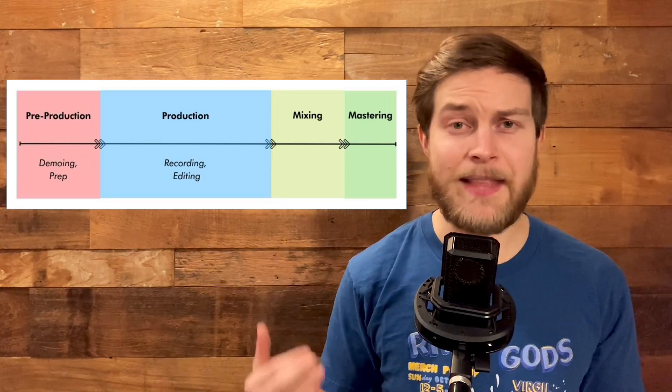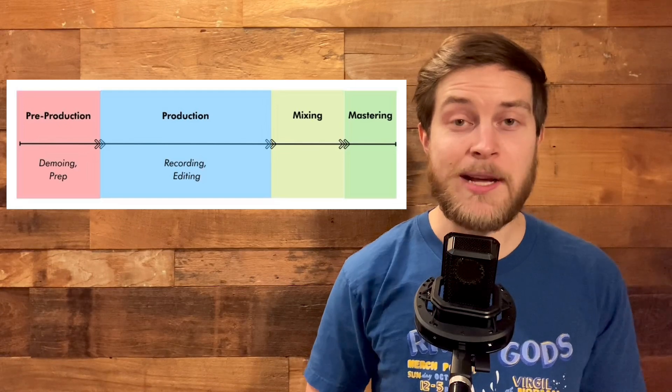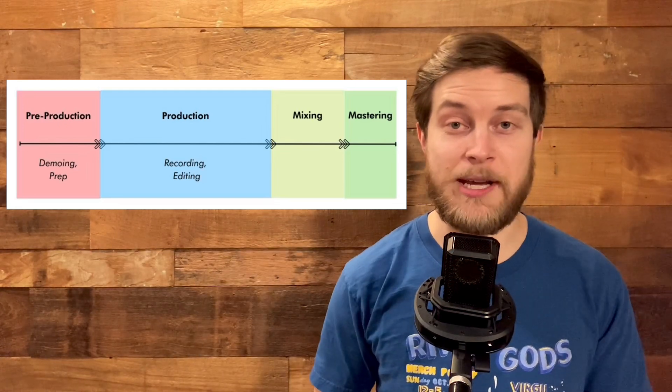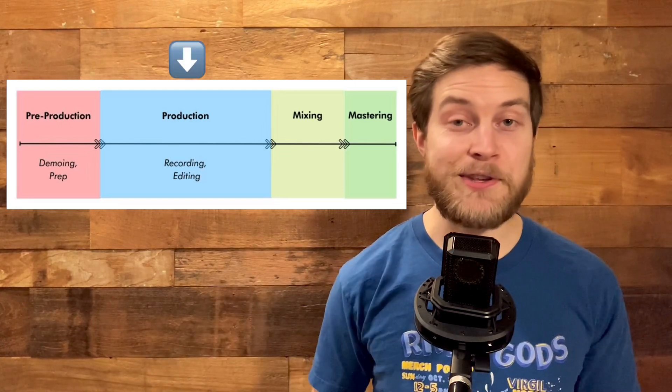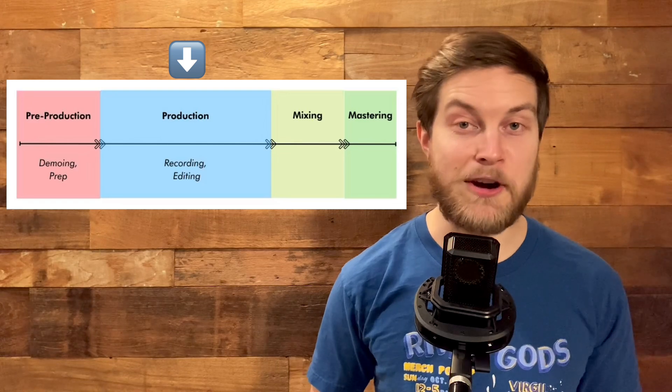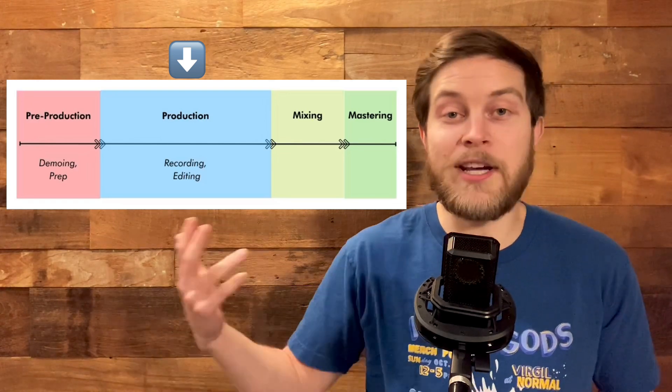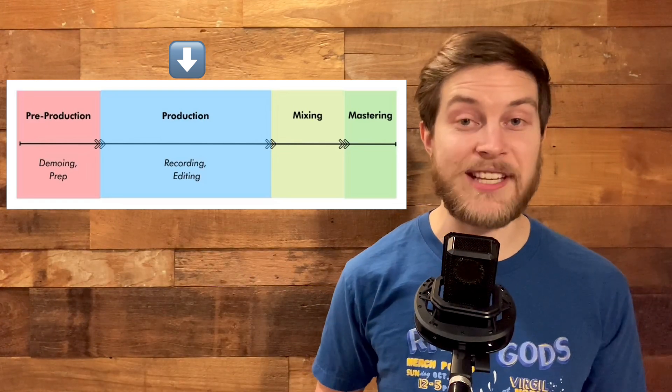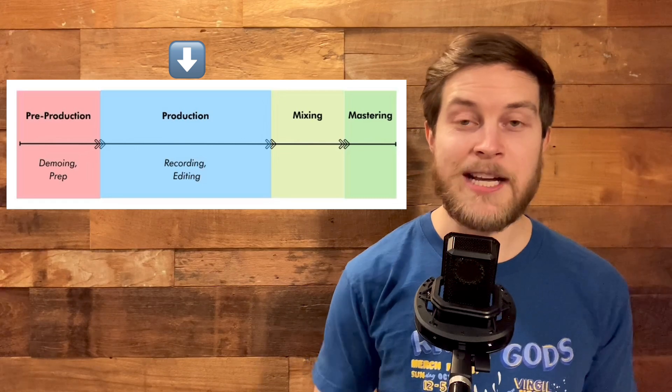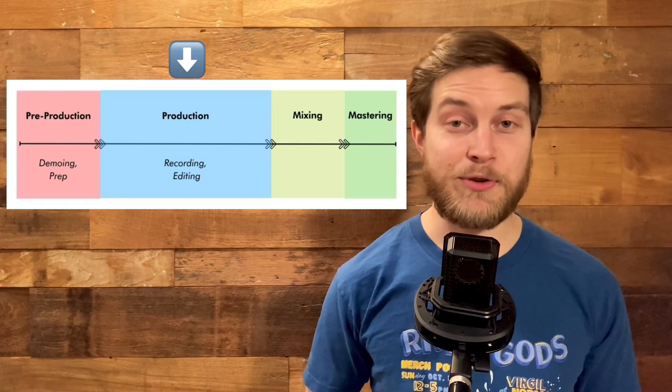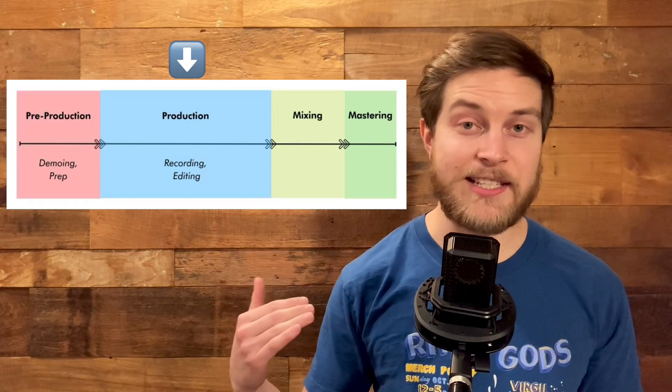During recording, the artist might use an EQ pedal in their electric guitar chain to clean up the low end. The recording engineer might run the vocal signal through a hardware EQ. During this stage, EQ is used to shape the incoming dry signal and get it as close as possible to the final desired product.